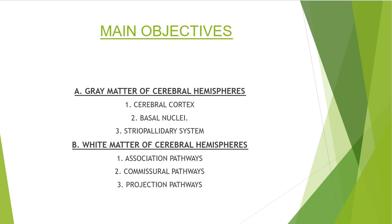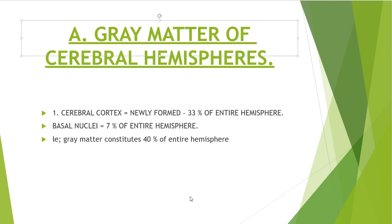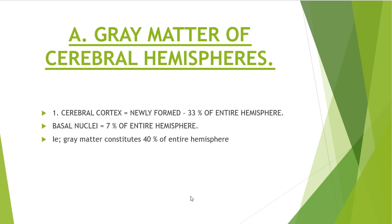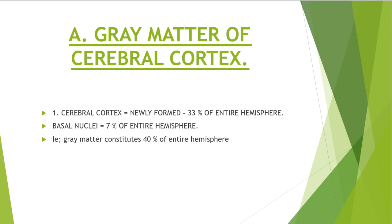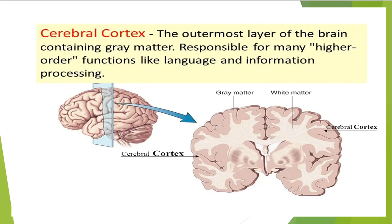The gray matter of cerebral hemispheres contains the cerebral cortex, which is newly formed and constitutes 33% of the hemisphere. The basal nuclei constitute 7% of the hemisphere, making the total gray matter 40% of the hemisphere. The cerebral cortex is the outermost layer of the brain, contained in the gray matter, and responsible for many higher-order functions.